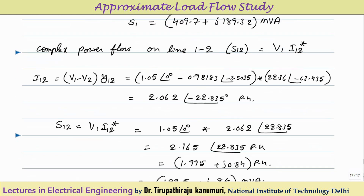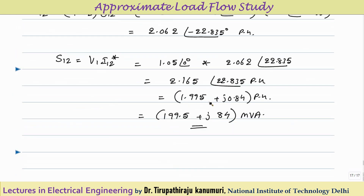For complex power flow on line 1 to 2: S12 = V1 * I12*, where I12 = (V1 - V2) * Y12. After computing I12 and taking its conjugate, S12 = V1 * I12* = 1.995 + j0.84 pu. Multiplying by the base MVA of 100: S12 = 199.5 + j84 MVA.